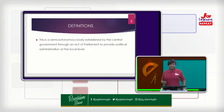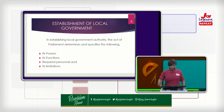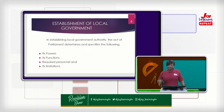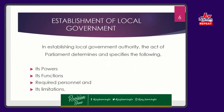Because it is an act of parliament, and parliament designs it so, it came into being in the Fourth Republican Constitution in 1992, where the constitution made provision for the presence of a local government body so that it enhances democracy. The entire chapter dedicated to local government administration outlines how it is established. In establishing local government authority, the act of parliament determines and specifies the following.